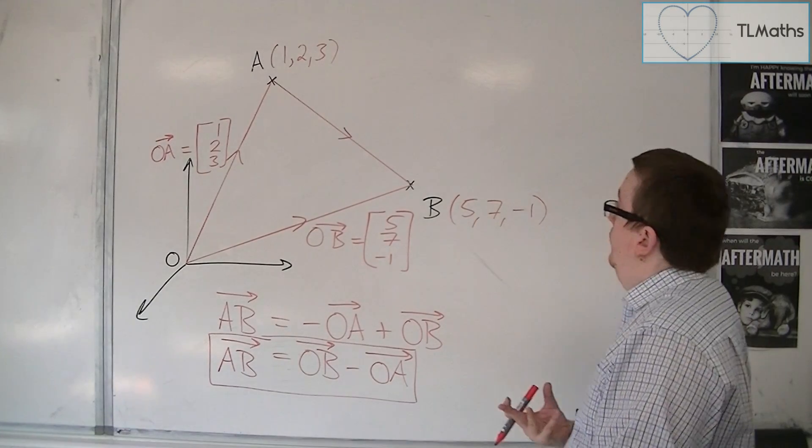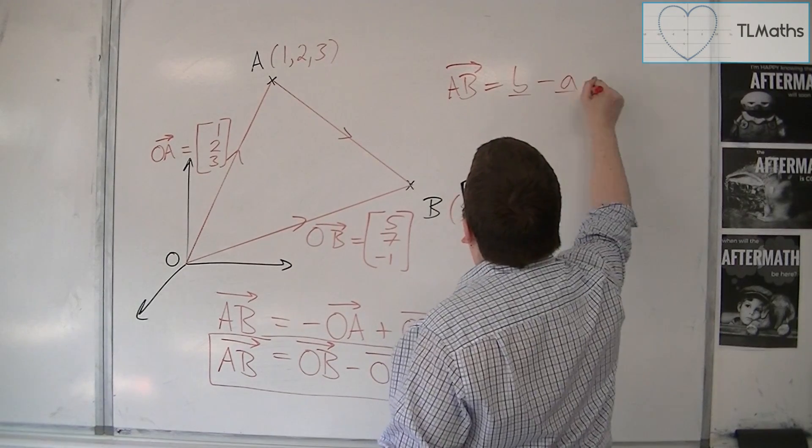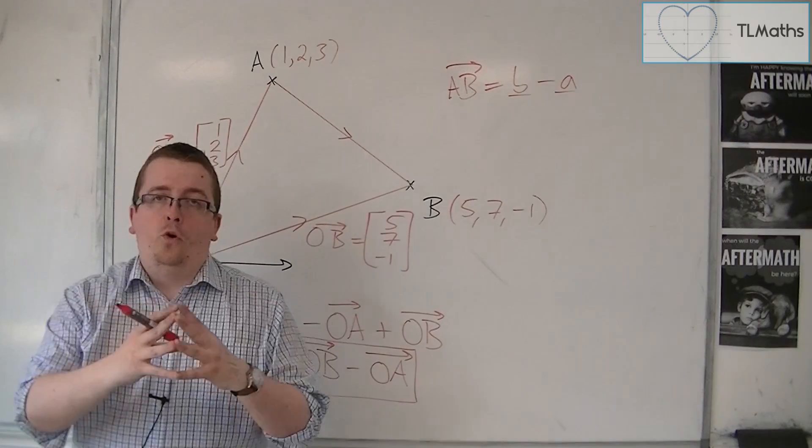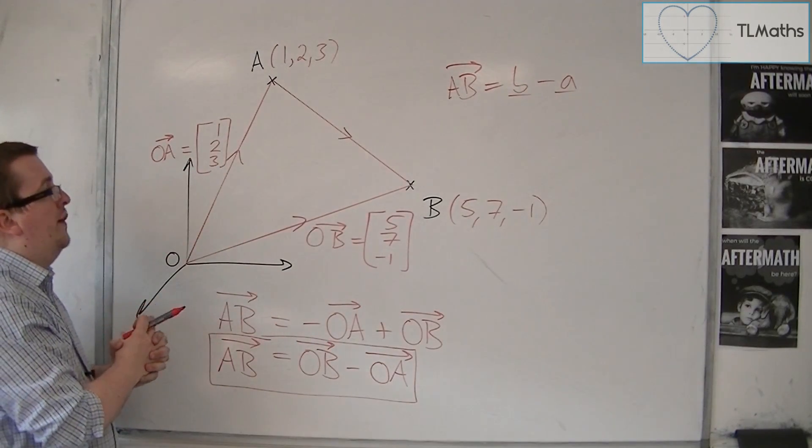Okay, so you might see this written down. A to B, B minus A. Okay, so you do the coordinates of B, effectively the position vector of B, take away the position vector of A.